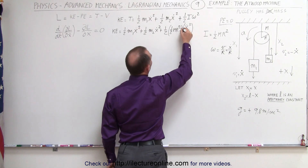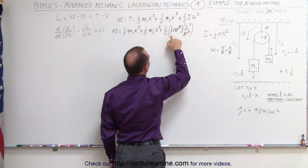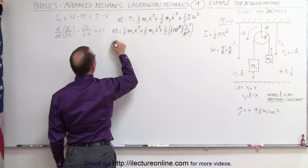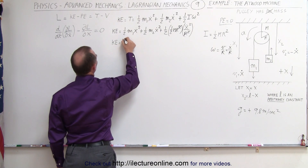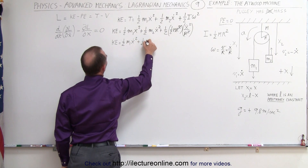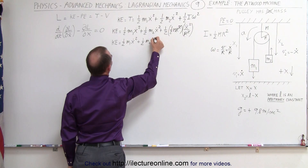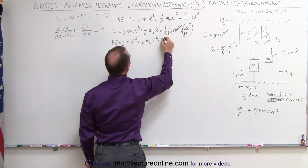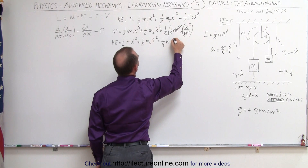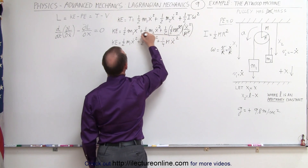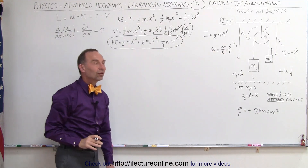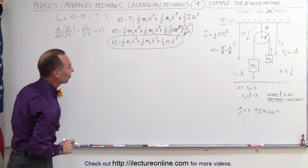Now I can simplify things a little bit. We have an r squared here and an r squared there. One-half times one-half is a quarter, which means we get kinetic energy equal to one-half m1 x-dot squared, plus one-half m2 x-dot squared, plus a quarter times the mass of the pulley times x-dot squared. So now we have an equation expressed in the kinetic energy of all three items in the Atwood machine — the two masses and the pulley.